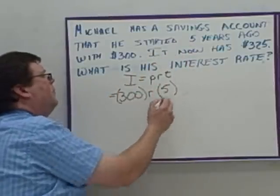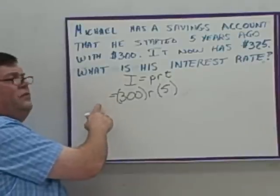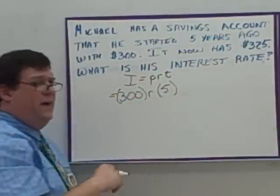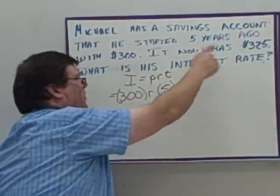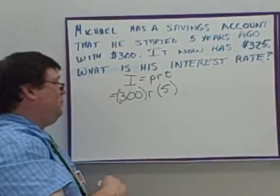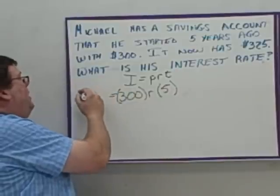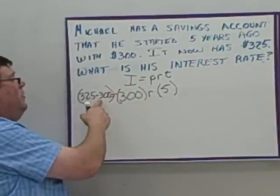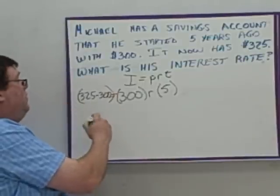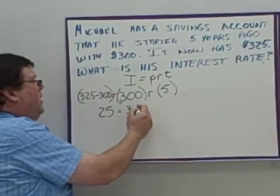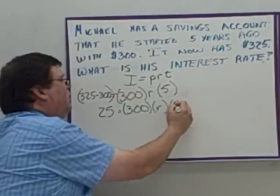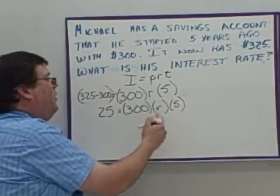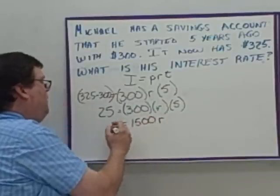The time is five years. The problem is, if I don't know the interest, I need to find it — and they gave me $325, which is how much he had after the $300 sat there for five years. That means the interest is $325 minus $300. The final minus the original gives you the interest earned. So we have: $25 equals $300 times R times 5. I multiply 300 times 5 to get 1,500, so now I have 1,500R equals 25.